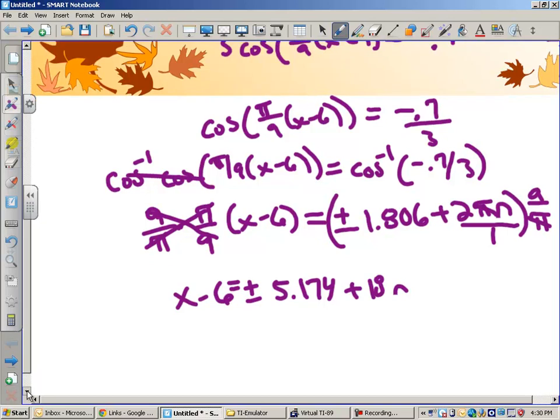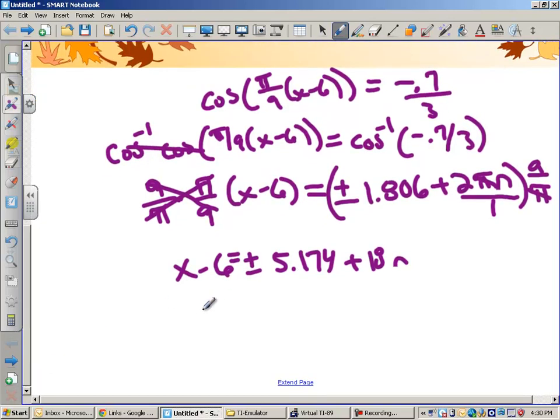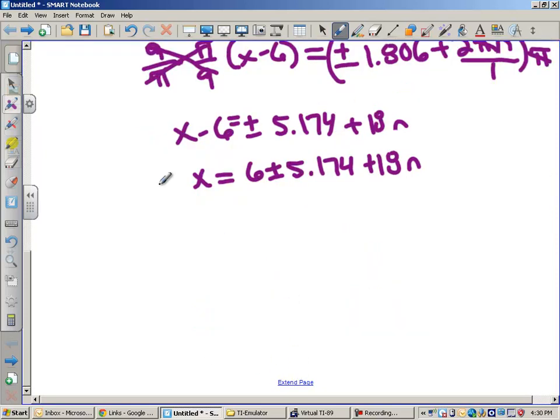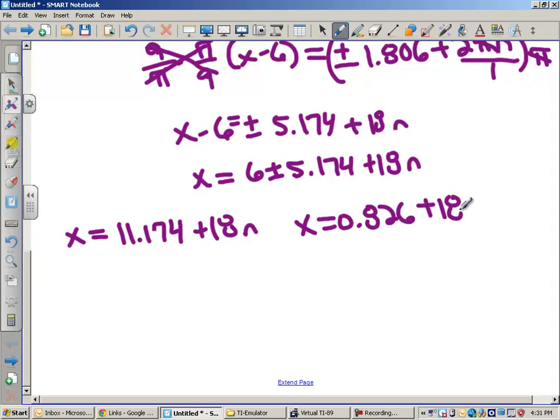So, I'm going to get x minus 6 equals plus or minus 5.174. We also have to distribute 9 over pi times the 2 pi n. The pi's cancel, and that gives me 18 n. Now, the next step is we're going to add 6 to both sides, so we'll get x equals 6 plus or minus 5.174 plus 18 n. So, let's write our two equations down. 6 plus 5.174 is 11.174 plus 18 n. And then 6 minus 5.174 is 0.826 plus 18 n. These are the general solutions.